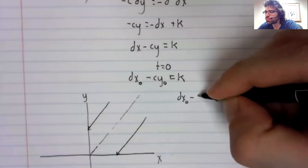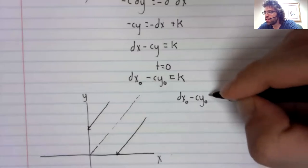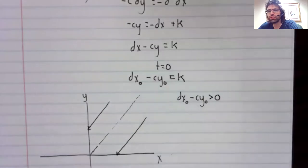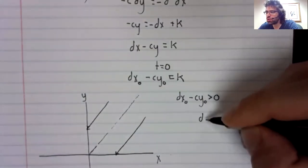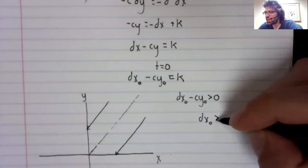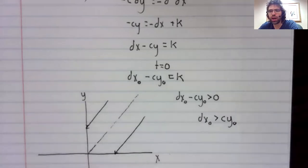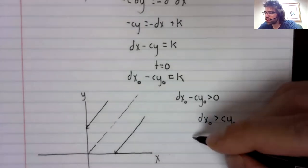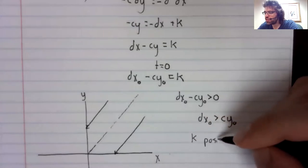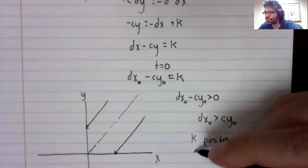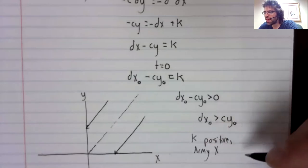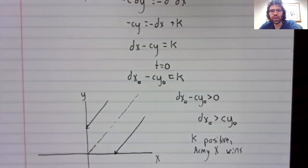Let me think this through. If k is greater than zero, then army x is stronger than army y. So if k is positive, army x wins. If k is negative, army y wins.